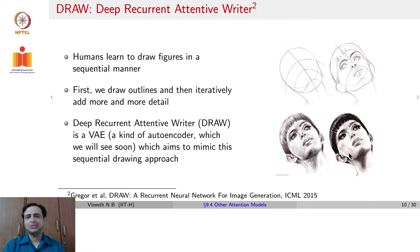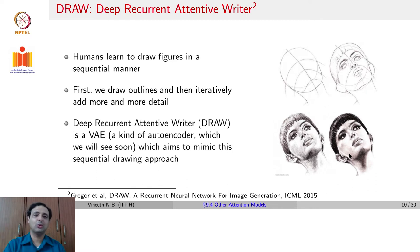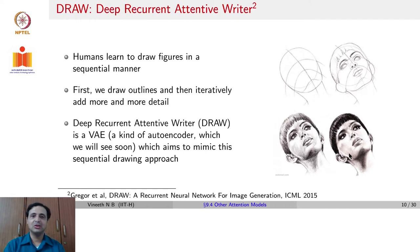That is the working of the Neural Turing Machine — a different use of what we saw as attention. We will now move on to the second method: DRAW, or Deep Recurrent Attentive Writer.